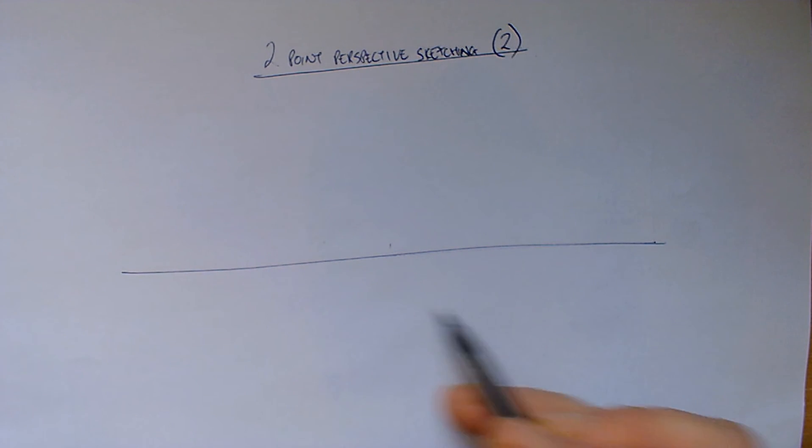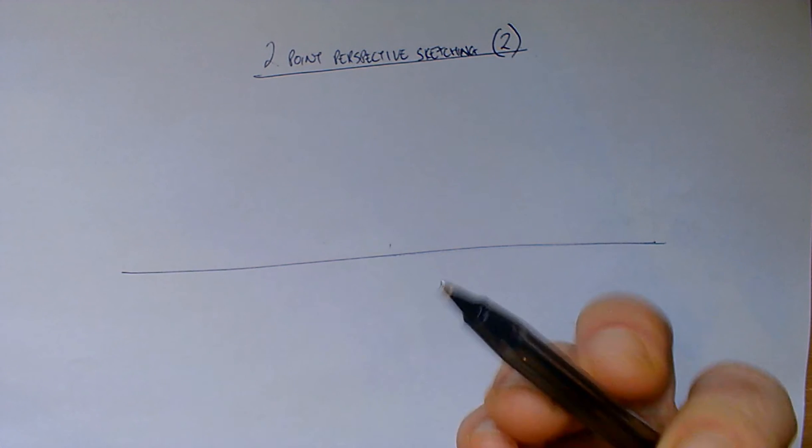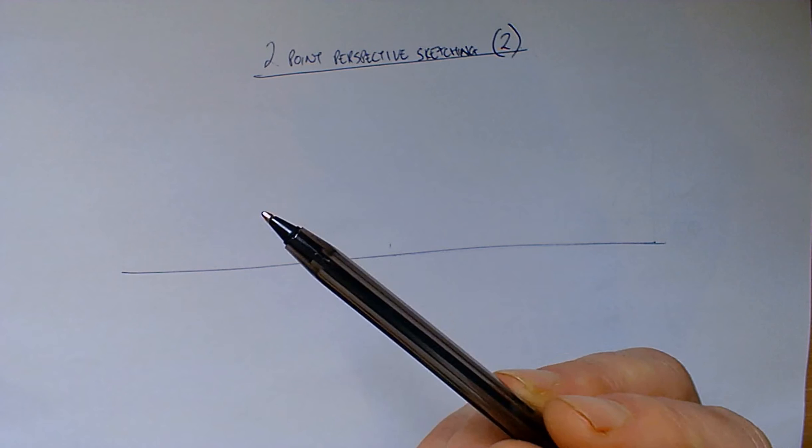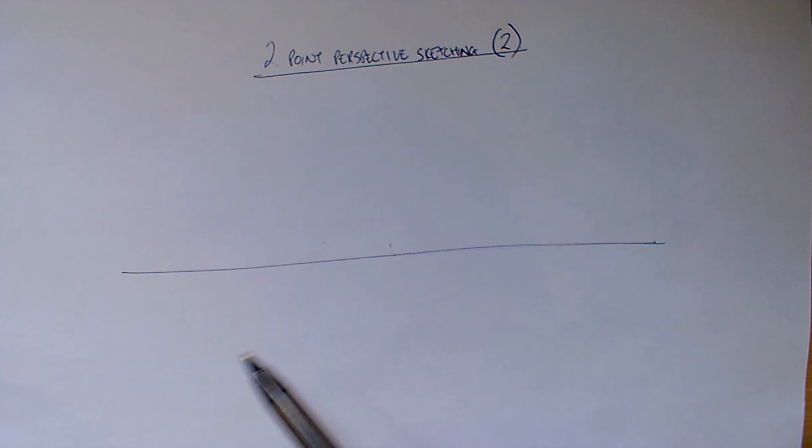Don't worry if it's a little bit wavy, it really won't matter in the end. And if you notice this time I'm using pen just to demonstrate that when we're sketching we don't want to be rubbing out lines. So we always try and work quite lightly and then add to the drawing as it goes and darken up the lines that we want to keep at the end.